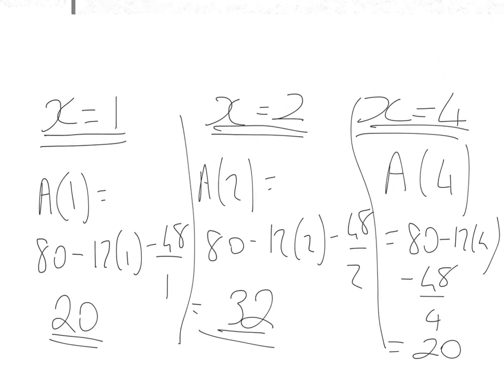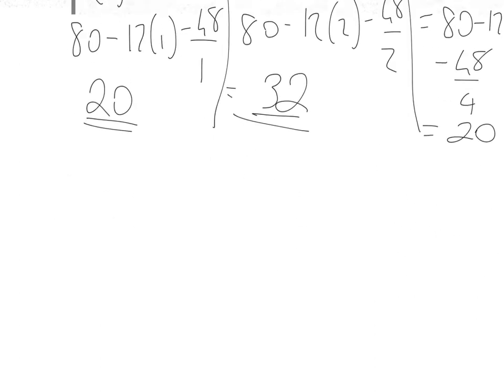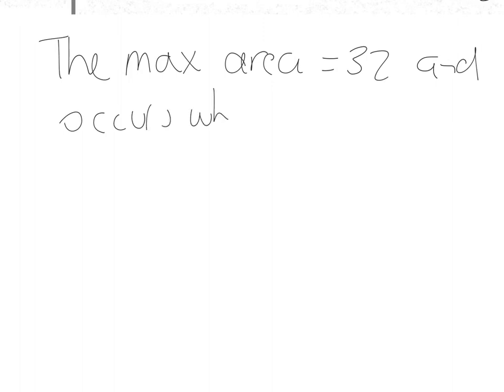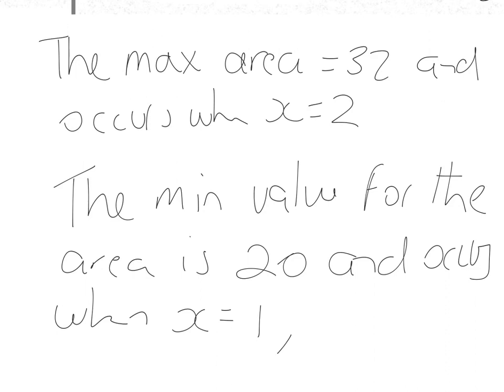So, what I can see is the greatest value for the area is definitely 32, and that occurs at x equals 2. The least value for the area is given by 20, and that occurs twice at x equals 1 and x equals 4. So the max area equals 32 and occurs when x equals 2. The min value for the area is 20 and occurs when x equals both 1 and when x equals 4.